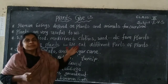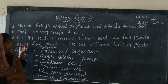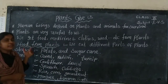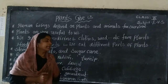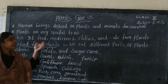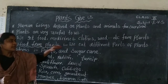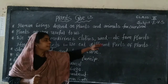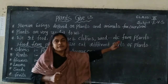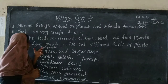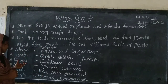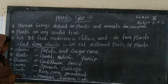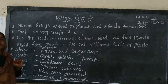Food from plants — let us discuss each in detail. We eat different parts of plants. They are: stem, roots, flowers, leaves, seeds, and fruits.